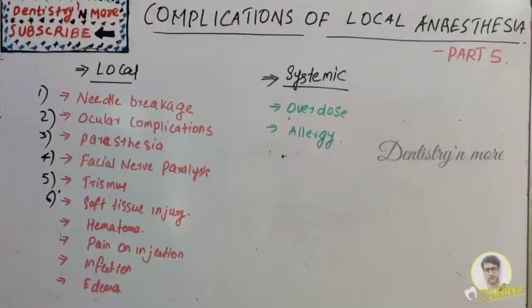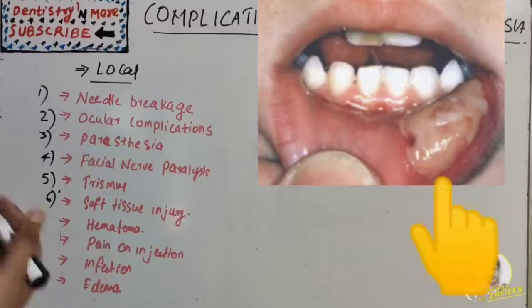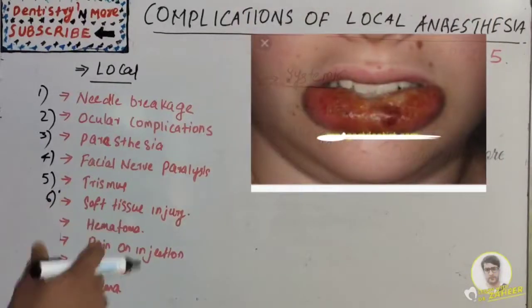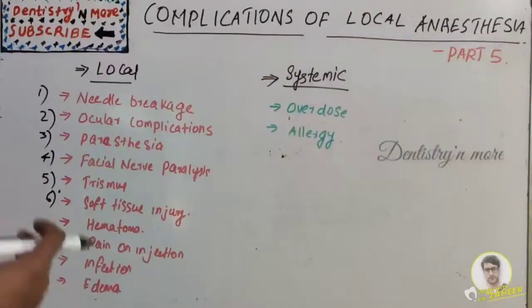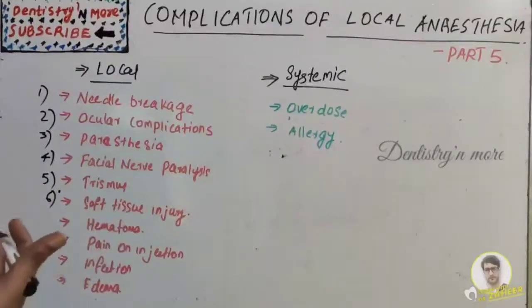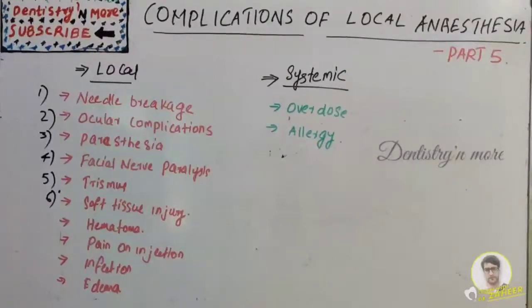Soft tissue injury is trauma to the lip or tongue caused by biting or chewing these tissues while still anesthetized, especially in children. Most commonly seen with IANB where the tongue and lip are anesthetized and the patient won't realize it. Prevention: keep a cotton roll between the lips and teeth, warn the patient, and give a self-adherent warning sticker for parents. Management includes analgesics for pain, antibiotics if infection is present, warm saline rinse to reduce swelling, and petroleum jelly to cover the lesion and minimize irritation.